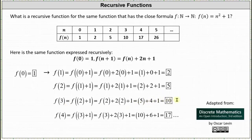Now that we know f(3), we can determine f(4). Notice for f(4), n = 3, since 3 + 1 = 4, giving us f(4) = f(3) + 2(3) + 1. f(3) = 10, and 2 × 3 = 6, so f(4) = 10 + 6 + 1, which equals 17.